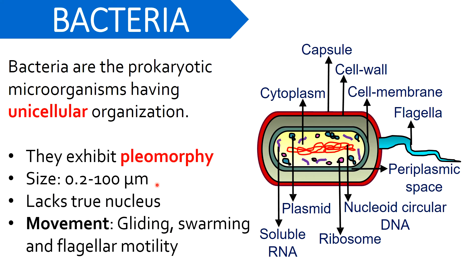Now let us discuss some of the properties of bacteria. Bacteria show pleomorphism, which means they exist in various shapes like rod shape, spiral, cocci, etc. Generally, the size of bacteria ranges between 0.2 to 100 μm. They are distributed worldwide in nature and they lack a true nucleus. Bacteria generally show three types of motility: gliding, swarming, and flagellar motility. Gliding motility is when bacteria move along surfaces without the involvement of appendages like flagella and pili. Swarming motility is movement along surfaces but driven by flagella. Flagellar motility is a common type of locomotion where bacteria move through helical appendages called flagella.